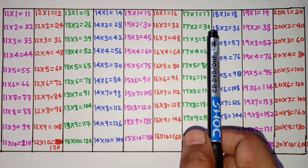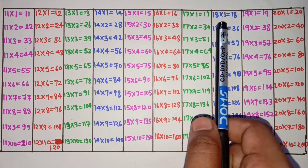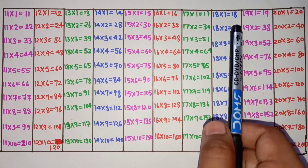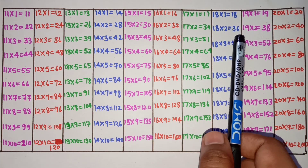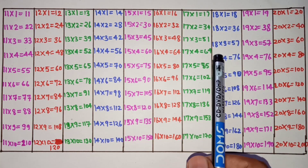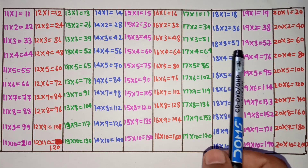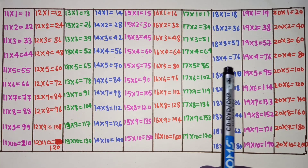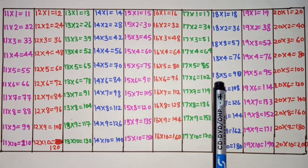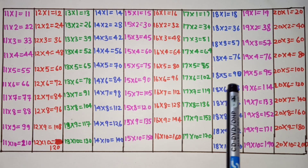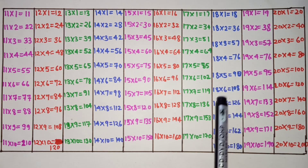18 1s are 18, 18 2s are 36, 18 3s are 57, 18 4s are 76, 18 5s are 90.